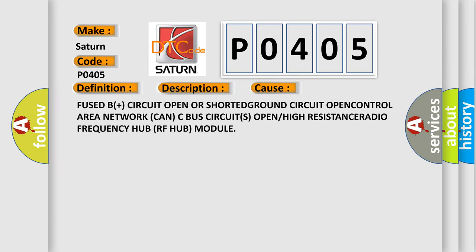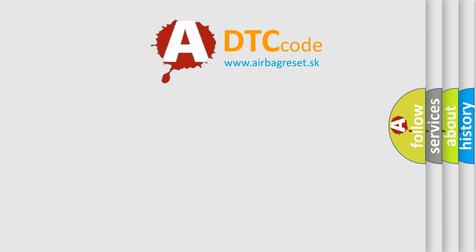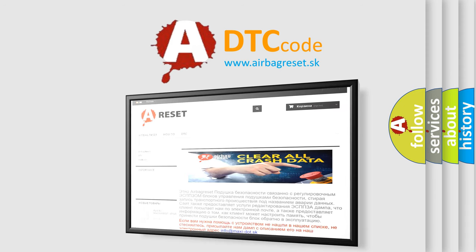This diagnostic error occurs most often in these cases: fused B+ circuit open or shorted to ground; circuit open; CAN bus circuits open or high resistance; radio frequency hub (RF hub) module fault. The Airbag Reset website aims to provide information in 52 languages. Thank you for your attention and stay tuned for the next video. Bye.